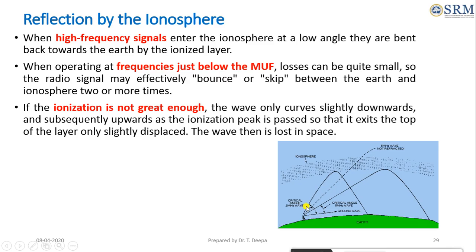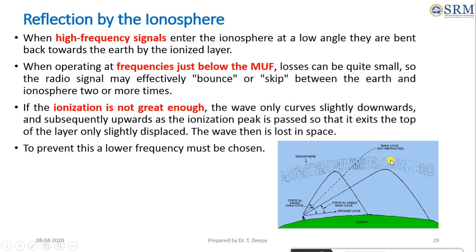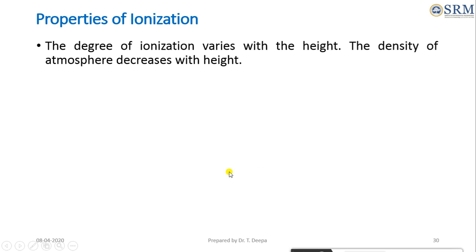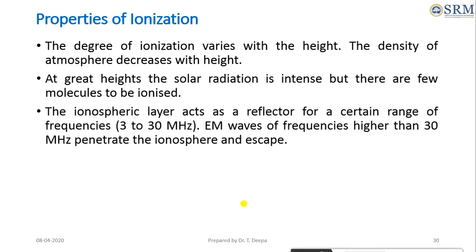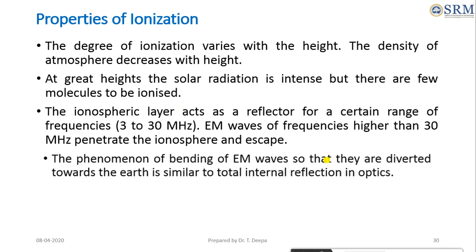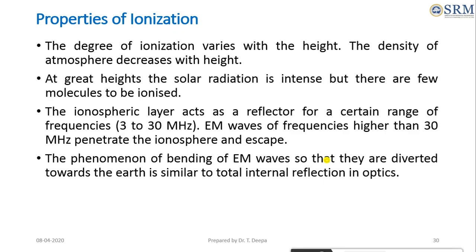If the ionization density is very low, the upper part of the wave is bent away from the earth and is lost in space, so to prevent this a low frequency must be chosen. The degree of ionization varies with height, and at greater altitudes solar radiation is intense but there are very few molecules to be ionized. The ionospheric region acts as a reflector for frequencies in the range of 3 megahertz to 30 megahertz, while electromagnetic waves higher than 30 megahertz penetrate the ionosphere and escape.